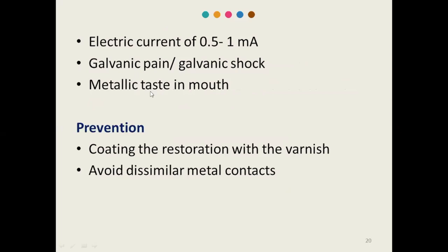The galvanic pain is mainly due to stimulation of the tooth pulp nerve endings. How will you prevent it? Prevention is: first, avoid dissimilar metal contacts — there should not be two dissimilar metal restorations together. You can also prevent it by coating the restoration with varnish so there is no direct contact between the two metals or with the saliva — mainly silver amalgam is coated with a varnish layer.